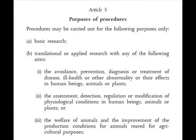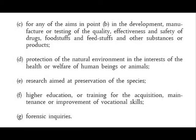B reads: translational or applied research with any of the following aims — one: the avoidance, prevention, diagnosis or treatment of disease, ill health or other abnormality or their effects in human beings, animals or plants; two: the assessment, detection, regulation and modification of physiological conditions in human beings, animals or plants; or three: the welfare of animals and the improvement of production conditions for animals reared for agricultural purposes. C: for any of the aims in point B in development, manufacture or testing of the quality, effectiveness and safety of drugs, foodstuffs, feedstuffs and other substances or products.